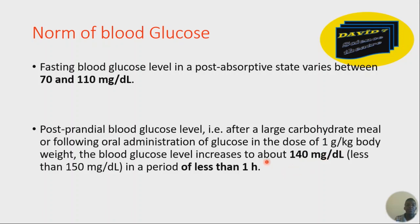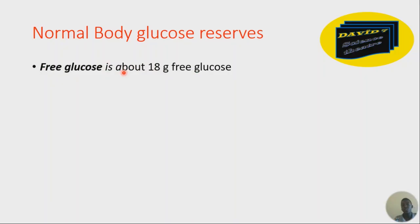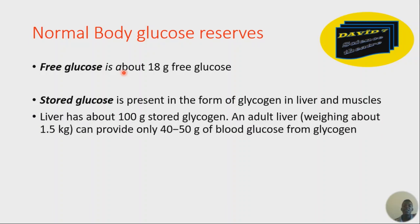Blood glucose is stored in the body at several sites. We can have free glucose — about 18 grams — in blood. Glucose can also be stored as glycogen in the liver and in the muscles. However, muscle glycogen cannot release glucose directly into blood because of a certain enzyme — the glucose phosphorylase enzyme.